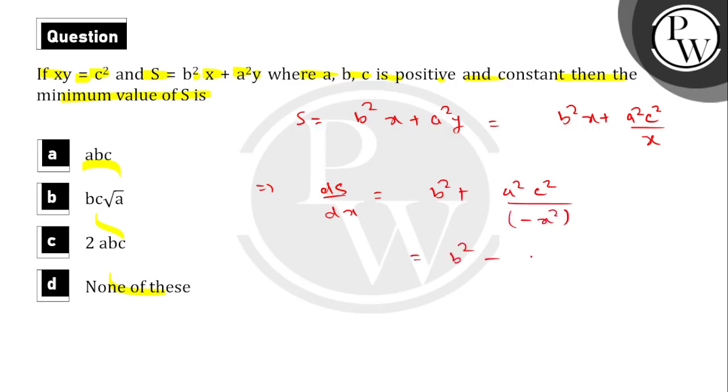Then the value is equal to b square plus a square times c square upon x square. That is finally b square minus a square c square upon x square equal to zero.